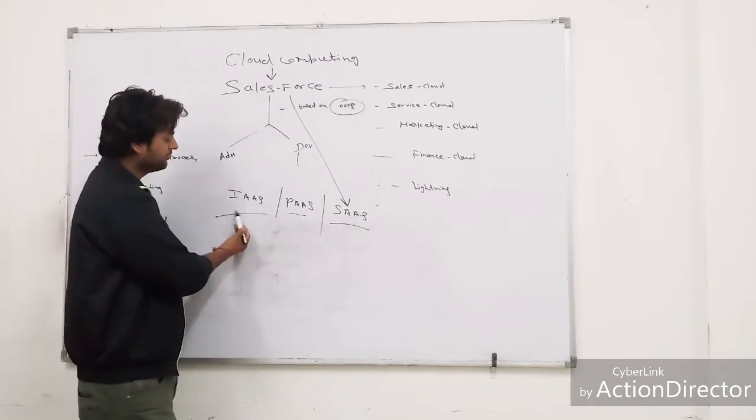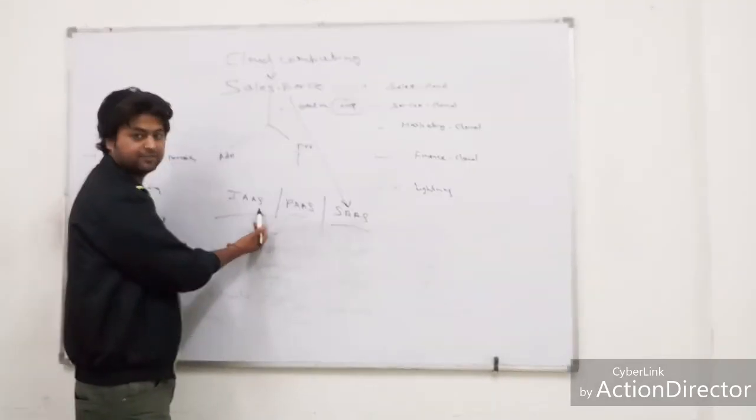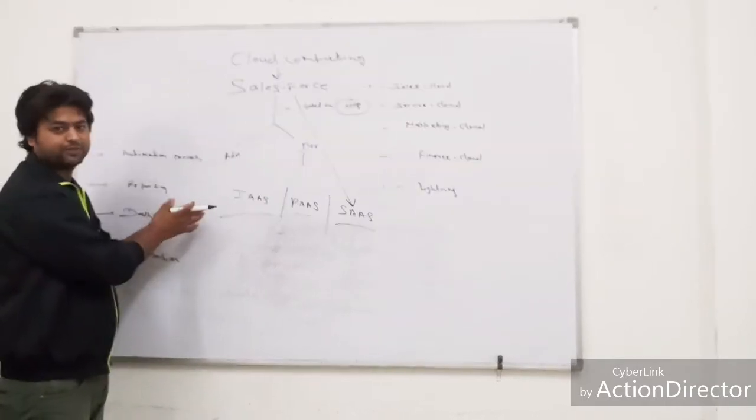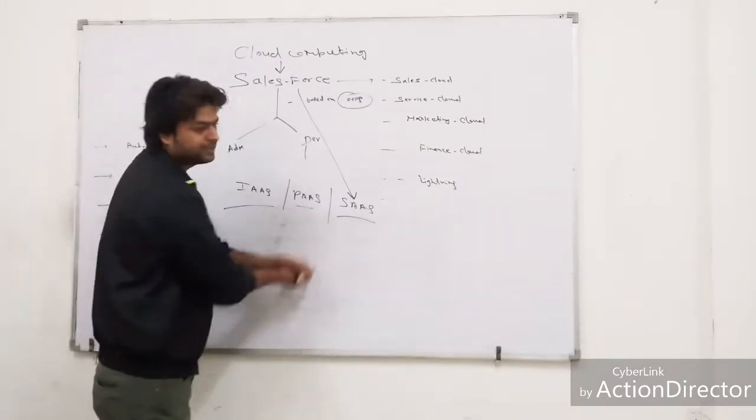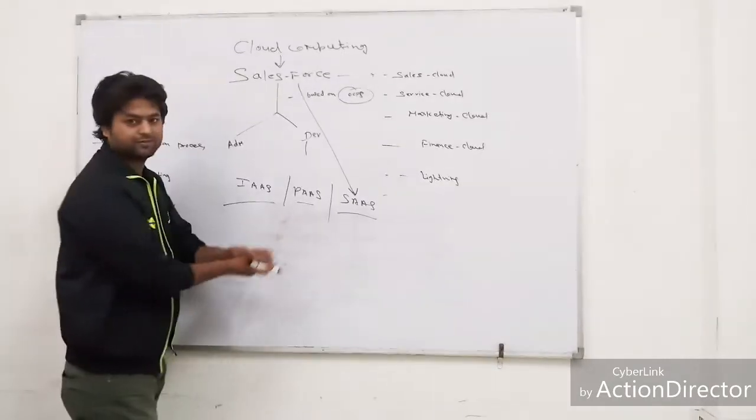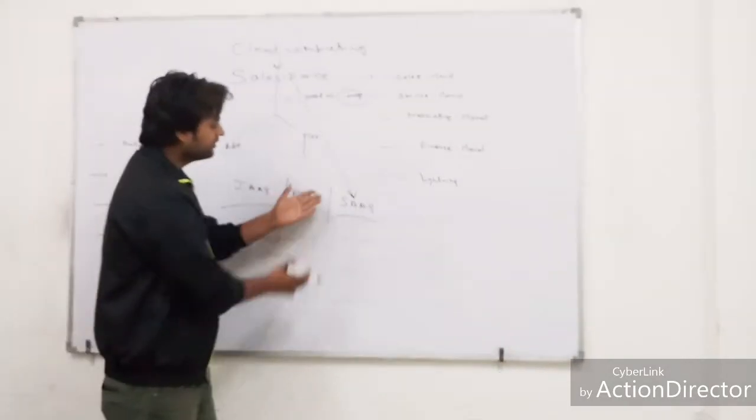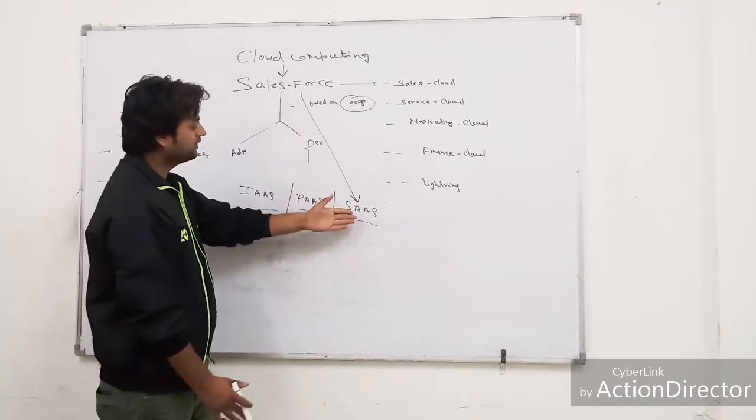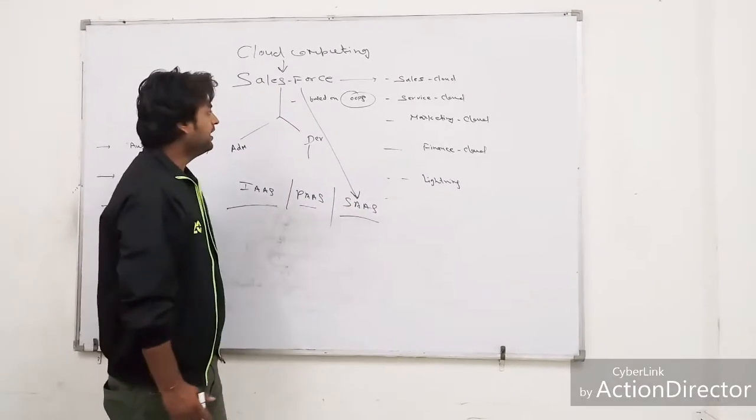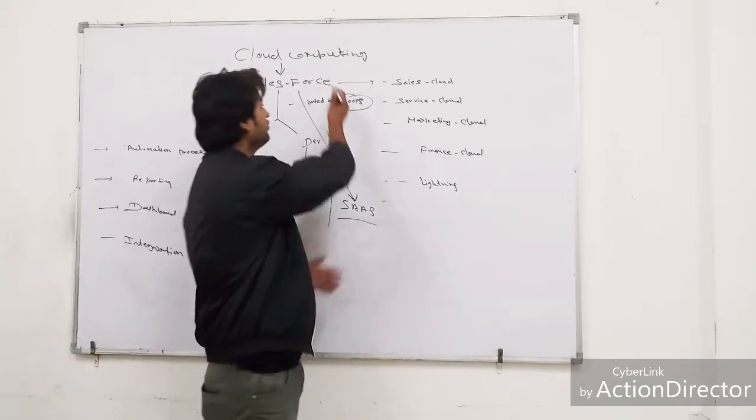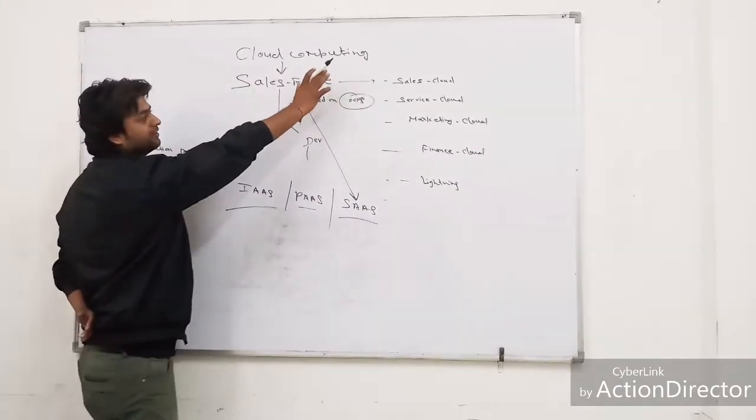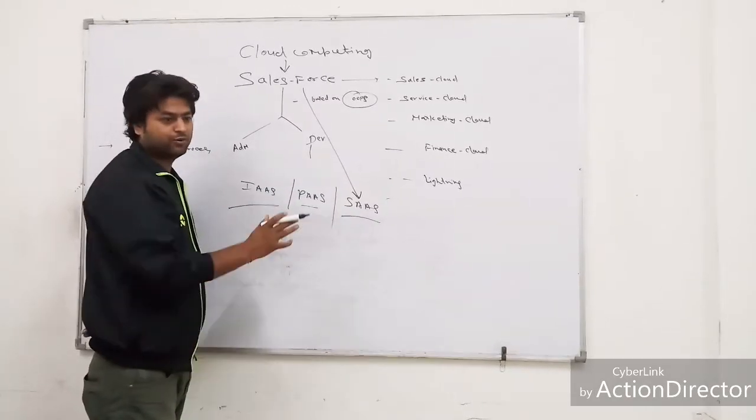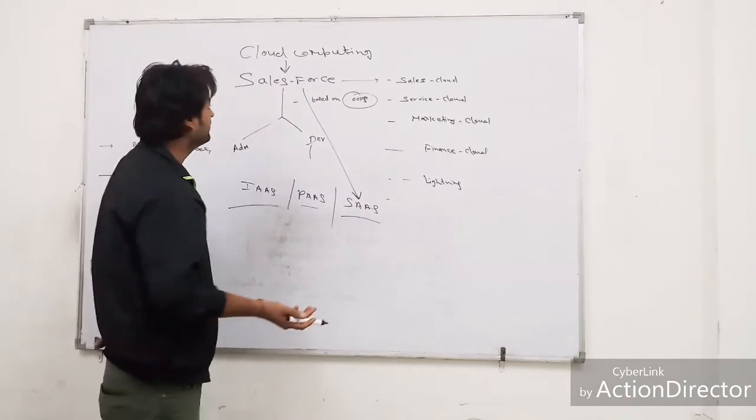IaaS means infrastructure as a service, which is related to the network part of cloud computing. The second is PaaS, platform as a service. The third is software as a service, and Salesforce comes in software as a service. The best usage of cloud computing is that we don't need any hardware or software to install on our PC or machine.